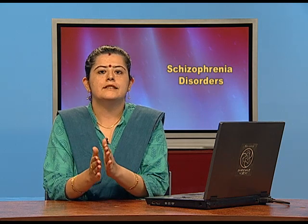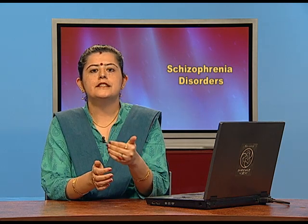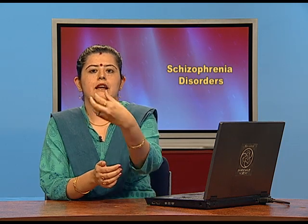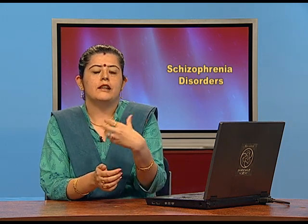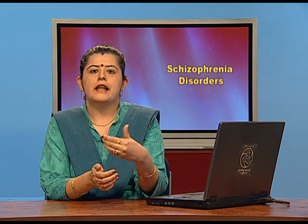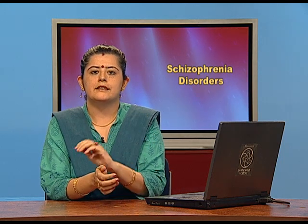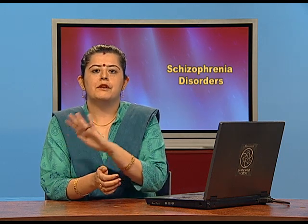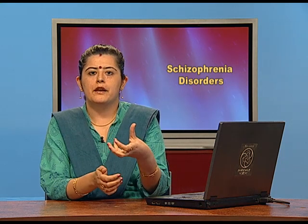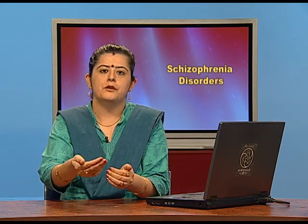There are various categories of delusions. The first is persecution. Persecution refers to somebody very strongly feeling that there is an investigative agency or a spy that is after them, wanting to kill or harm them. There is no actual event happening, but the person very strongly holds on to this belief that somebody is following them, spying on them, and is about to kill them — so they need protection.